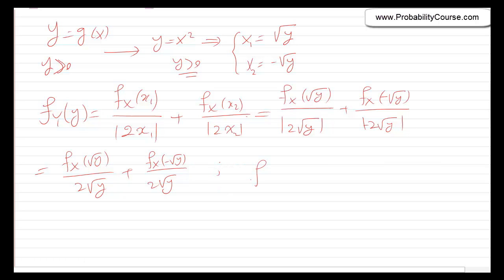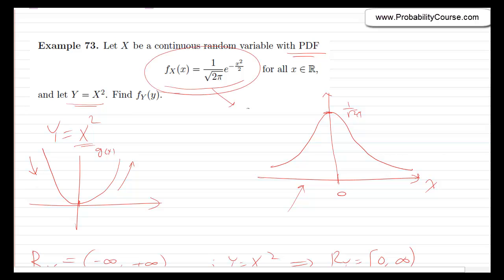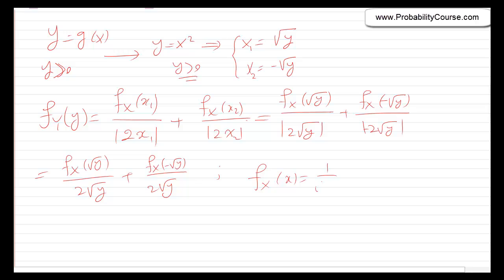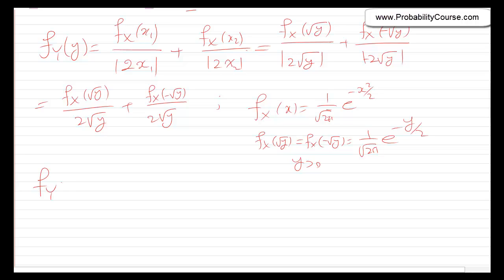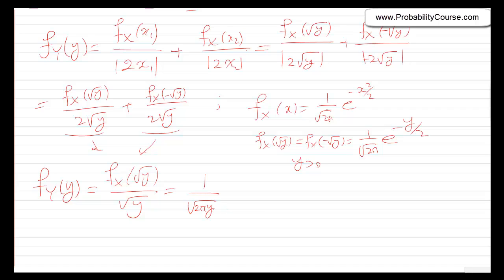Note that f_x of x equals 1 over square root of 2π times e to the minus x squared over 2. So f_x of square root y and f_x of minus square root y are both equal to 1 over square root of 2π times e to the minus y over 2. Since these two terms are equal, the pdf of y becomes 2 times f_x of square root y divided by 2 times square root y, which simplifies to 1 over square root of 2π y times e to the minus y over 2, for y greater than 0.